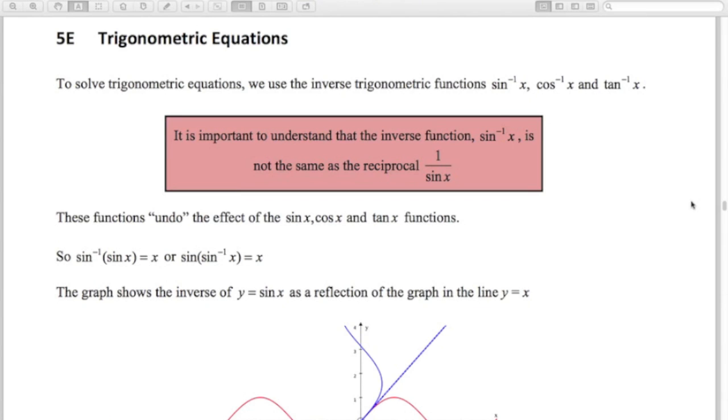First thing to recognize is when we're using our calculator to solve these equations, we go shift sine or shift cos or shift tan. On the calculator we've written a little sine to the minus 1 x. It's important to realize that this does not mean 1 over sine x. Last year you would have had the definition of negative index, so this is notation telling us that this is the inverse function of sine. It's not 1 over sine of x.